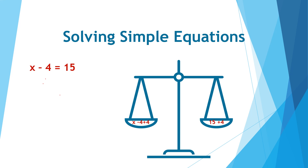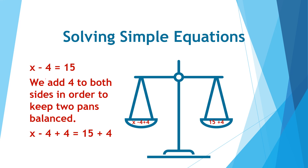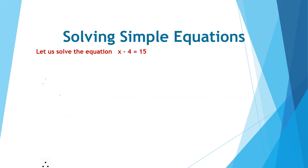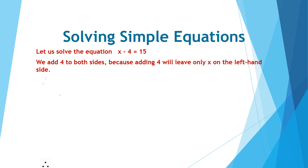Let us now try to see how we can solve it. To take away this minus 4 from the left hand side, we add 4 to both sides of the equation. So we have x minus 4 plus 4 on the left side pan and 15 plus 4 on the right side pan. Adding 4 will leave only x on the left hand side.